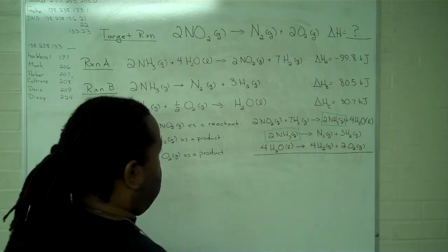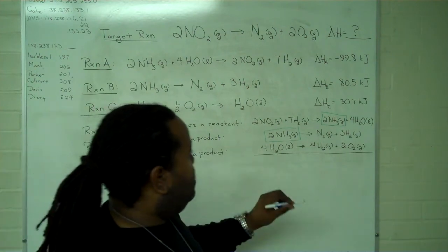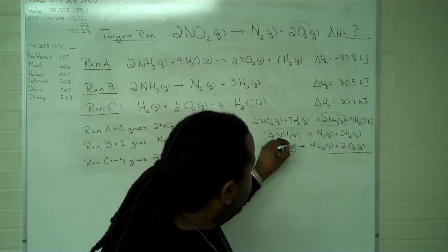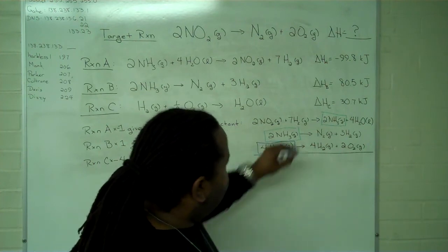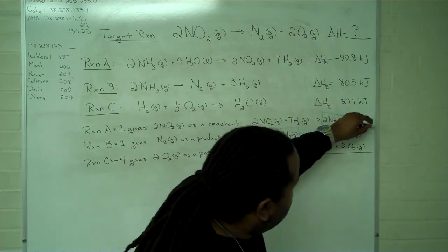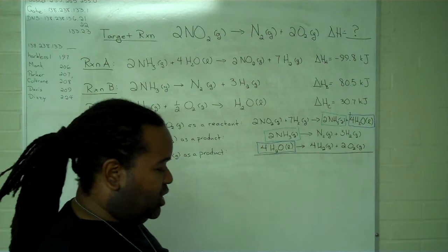Using the blue pen, I can verify that I have four waters as reactants to cancel four waters as product.